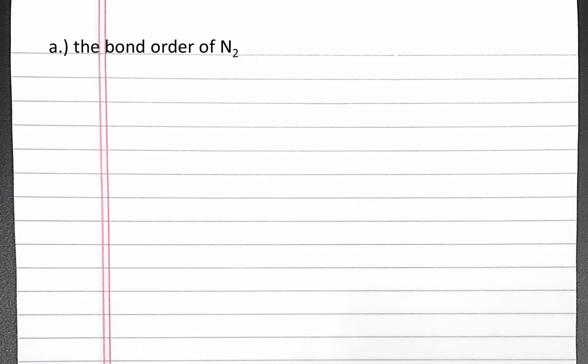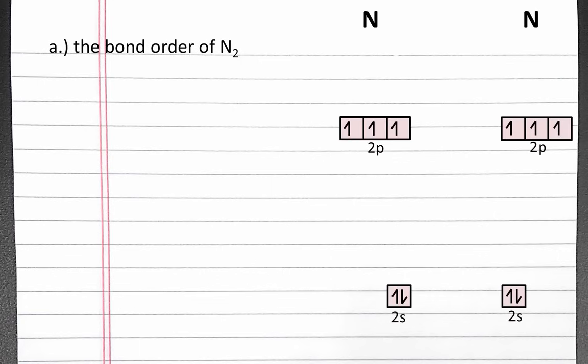First, we'll calculate the bond order of N2 by creating a molecular orbital diagram. We'll start with the orbital diagram for both nitrogen atoms, focusing on the valence electrons. The 2s atomic orbitals of both nitrogen atoms will combine to create two molecular orbitals — the sigma 2s bonding and antibonding orbitals. The antibonding orbital is higher in energy and the bonding orbital is lower in energy than the 2s atomic orbitals. The antibonding orbital is indicated with an asterisk.